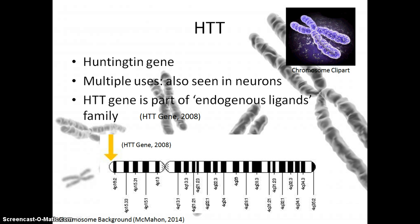Another gene sequence found in chromosome 4 is HTT, or the Huntingtin gene, which has multiple uses and can also be found in neurons. HTT is part of the indigenous ligands family, and it can be seen at the telomere region of the short end of chromosome 4.